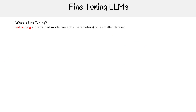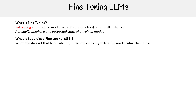Let's define what fine tuning is. Fine tuning is retraining a pre-trained model's weights — its parameters — on a smaller data set. A model's weights is the outputted state of a model. When we're talking about fine tuning, we're talking about a trained model's output. So what is supervised fine tuning, or SFT?